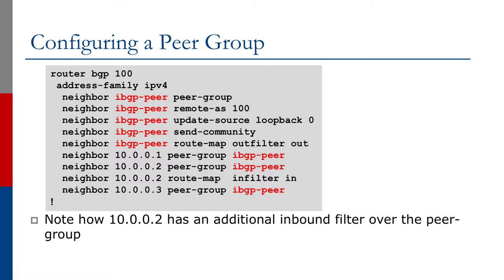Looking at the slide, the configuration is quite simple. We set up the peer group, give it a descriptive name, and then put all the configuration as a member of that peer group. For internal BGP, that can include the AS number, the update source being the loopback interface as we learned earlier, sending community to our IBGP neighbors, and any other outbound policy. We then apply this peer group to the neighbors that share the same outbound policy.